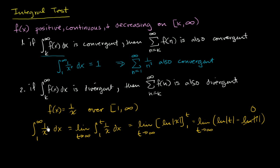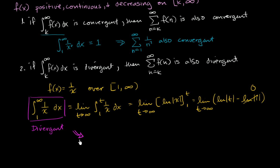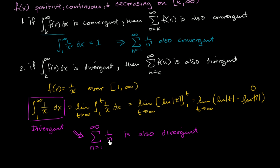The limit as t approaches infinity of natural log of t is unbounded — this goes to infinity. So this improper integral is divergent. Because this is divergent, by the integral test — our function over this interval is positive, continuous, and decreasing — we can say therefore that the infinite series from n equals one to infinity of one over n, which is the harmonic series, is also divergent.